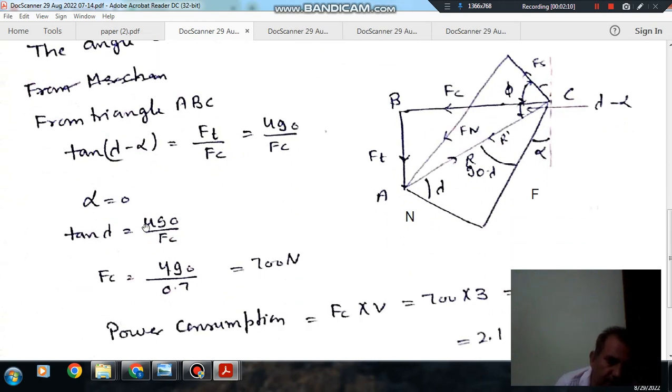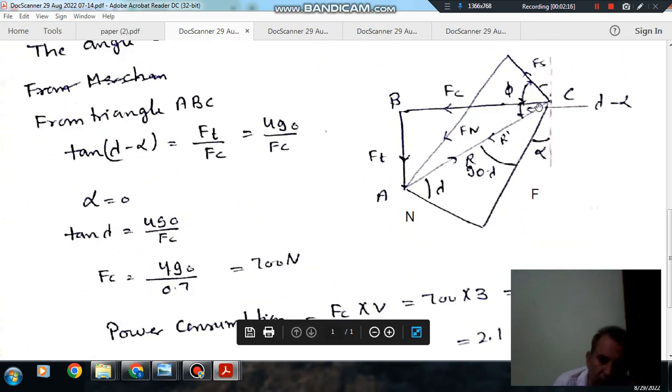So this is your Fc. So tan lambda is 490 by Fc, so Fc comes out to 700N. So this is your cutting force.